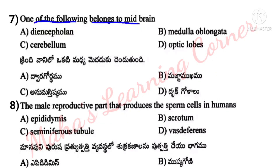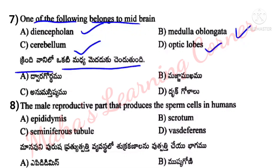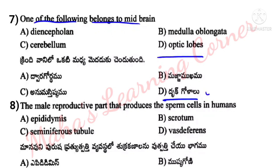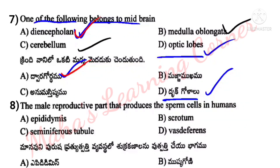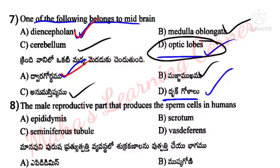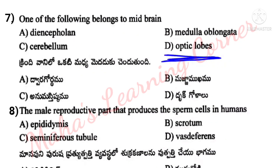Next question: One of the following belongs to the midbrain. Options: A. Diencephalon, B. Medulla Oblongata, C. Cerebellum, D. Optic Lobes. Correct answer: Option D is the correct answer — Optic Lobes belong to the midbrain.